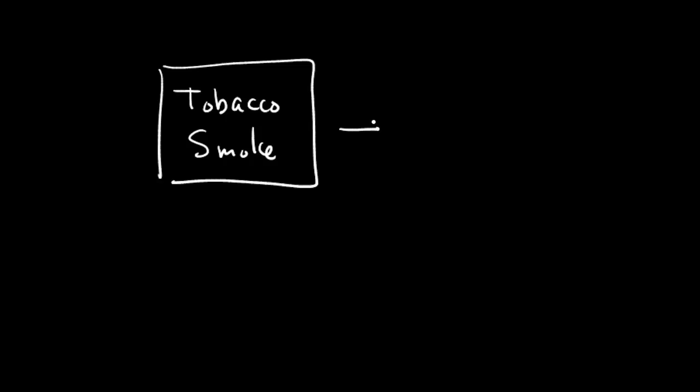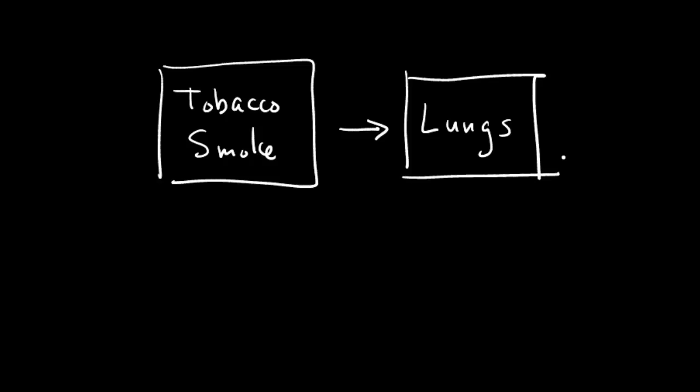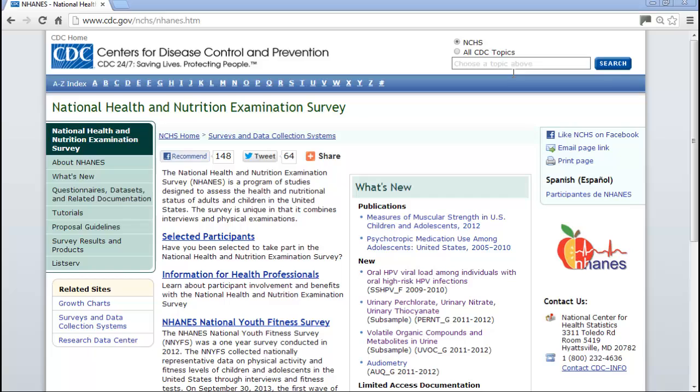This video continues the initial step of choosing a cause and effect to model. You should have already watched Part 1, called 'Choosing a Cause and Effect to Model.' As discussed there, I've decided to model tobacco smoke as my cause, with an outcome related to the health of the lungs. Let's go to the NHANES website to see what possibilities exist for this kind of model.